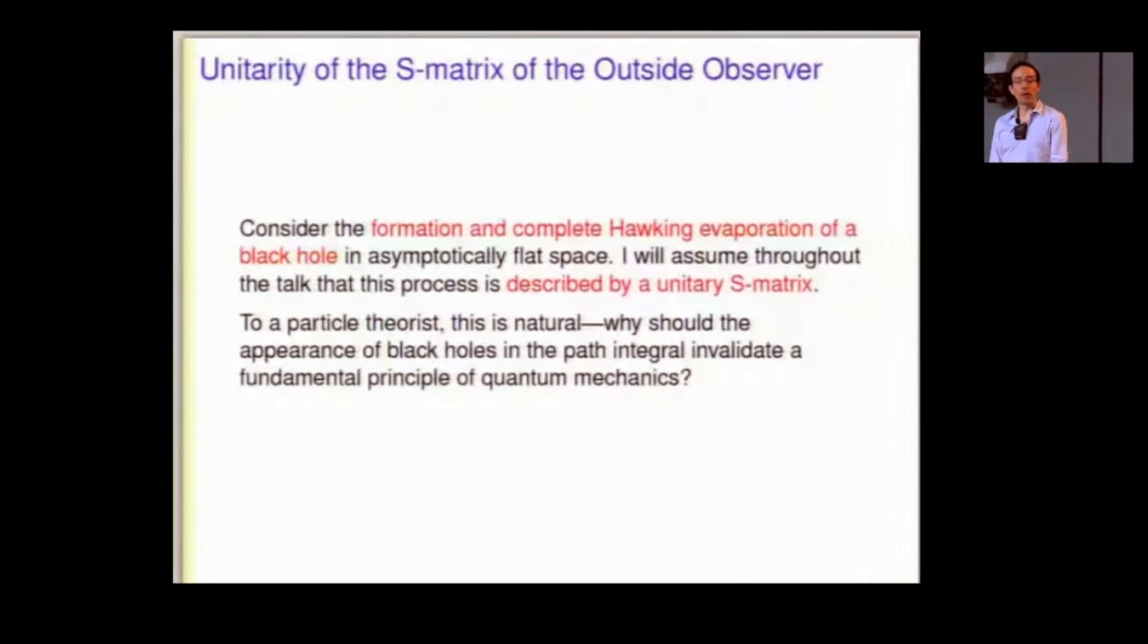We're going to think about a black hole that forms from a pure state, let's say, and it's complete Hawking evaporation after a timescale R cubed. And, what's non-negotiable is that I will assume throughout this talk that this is described by a unitary S matrix. And, I would think that in this audience, I'm going to get away with that assumption. In any case, without that assumption, no paradox.